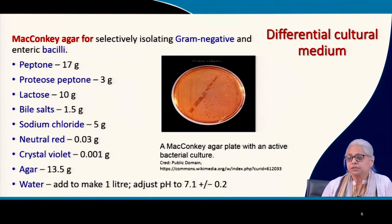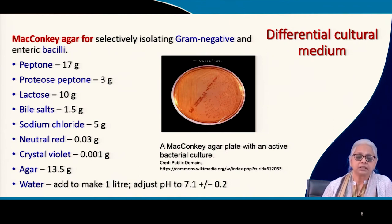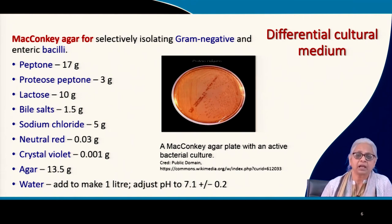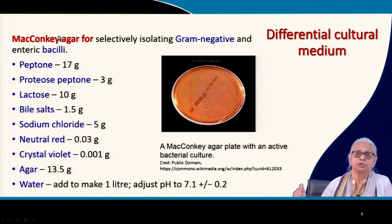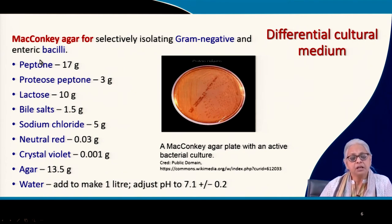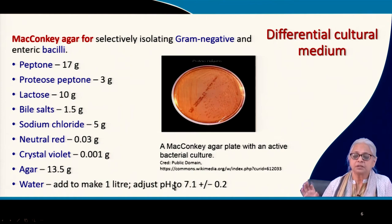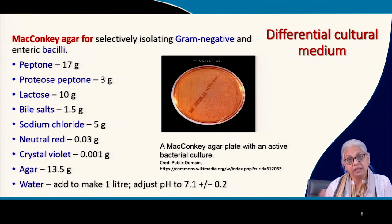Then we have what is called a differential culture medium. You can use different types of culture media for isolating a large number of bacteria. For example, if you want to look at gram-negative bacteria, enteric bacteria, or some other type, there are certain agars designed for culturing those species. Here is an example with complex mixtures of peptone, lactose, bile salt, sodium chloride, and so on — designed for cultivating a particular type of bacterial species.